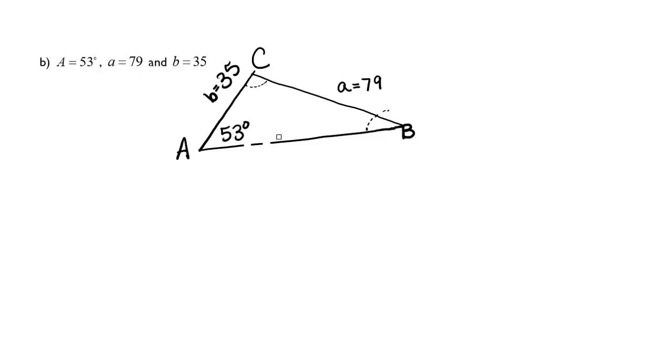Then angle C I don't know, side C I don't know. Once again we have this scenario where we could have something changing. We could have this side A swing through and hit the other side, or we could have it be longer than B and only have one triangle.